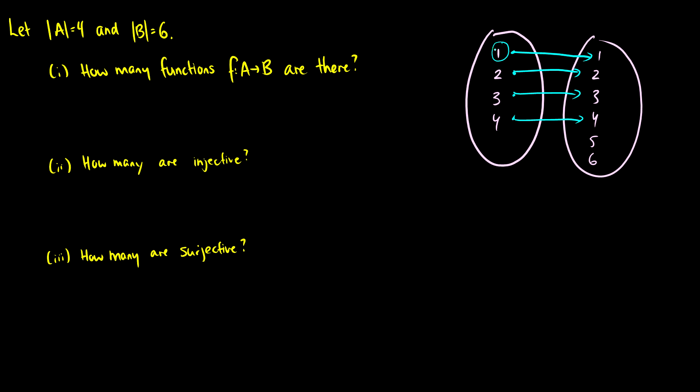Our first element has six options it can map to. Our second element also has six options. Our third one has six options and our fourth one has six options. Therefore our result is going to be six to the four.